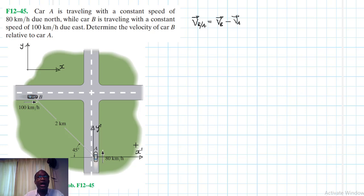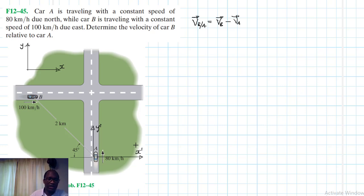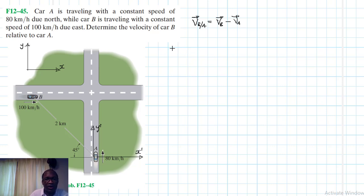X prime and Y prime only translate — there is no change in direction. Therefore, we expect our relative velocity to only have a change in magnitude, not direction. This is very important to note.